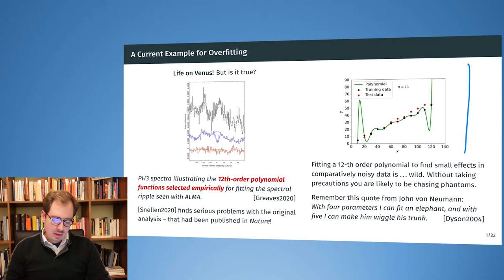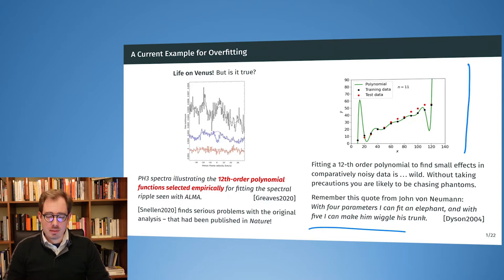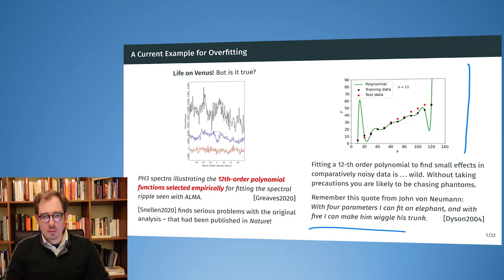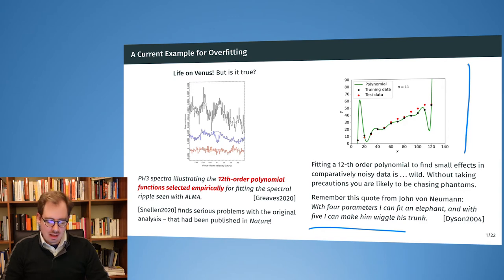Fitting a 12th order polynomial is quite wild. You have to take precautions to prevent overfitting, and apparently those were not present in this publication. Here again we have a figure from an earlier lecture showing the problems of overfitting by going to polynomials of too high an order. As a historical remark, John von Neumann, a famous mathematician, said that with four parameters he can fit an elephant, and with five parameters he can make the elephant wiggle his trunk. So you have to be careful not to use too many parameters — nothing good can come of that.